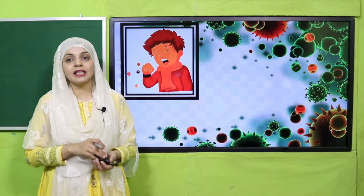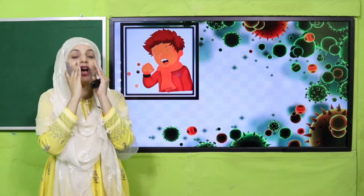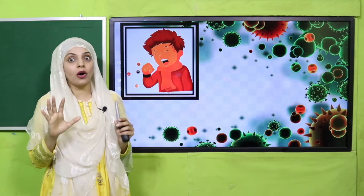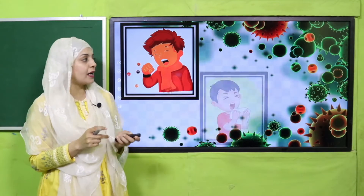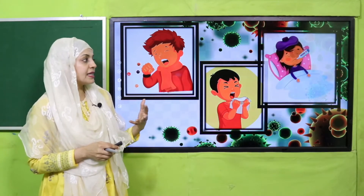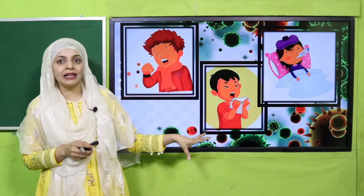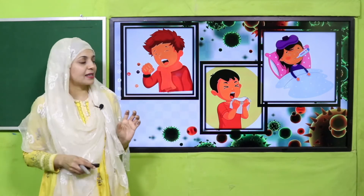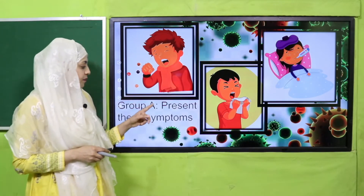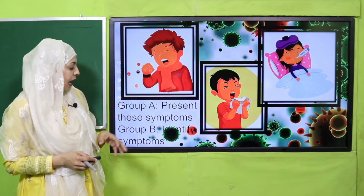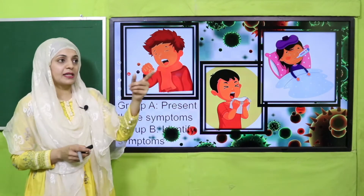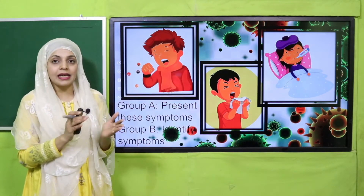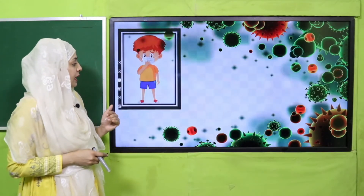Your teacher will divide you into three groups. The first group will come and express any symptom — like coughing or sneezing — acting it out. You will show symptoms such as having flu or fever and act accordingly. Then the second group will come and identify the diseases, naming the symptoms: this is coughing, this is sneezing, this is fever or headache.